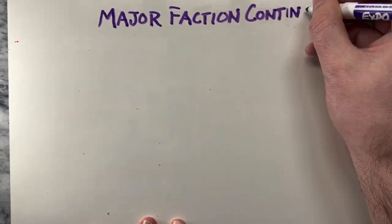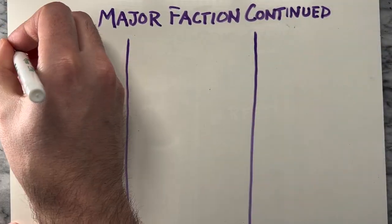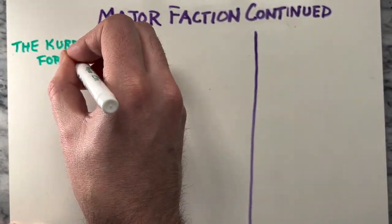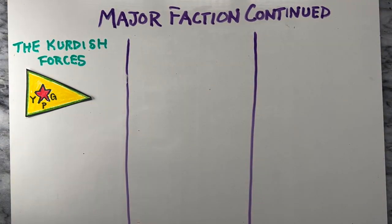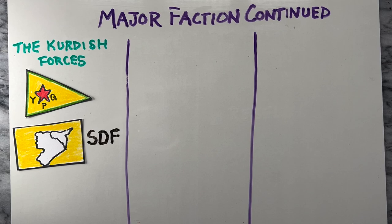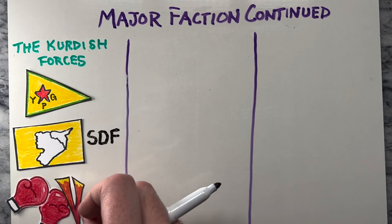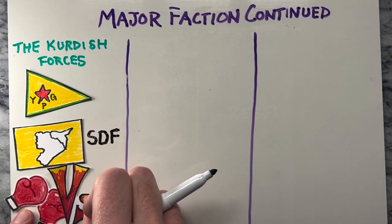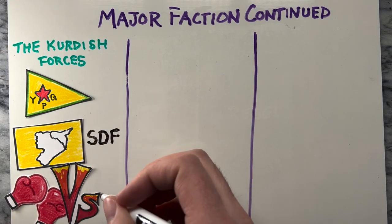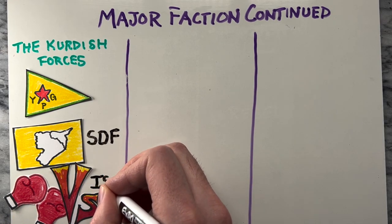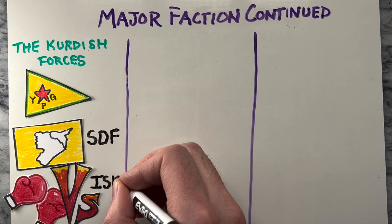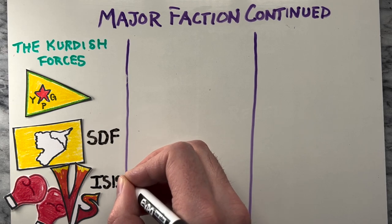Next is the Kurdish forces. The Kurdish People's Protection Units, the YPG, and the Syrian Democratic Forces, the SDF, are primarily focused on securing autonomy for the Kurdish regions of Syria. They have also played a key role in fighting against the Islamic State ISIS and other jihadist groups.